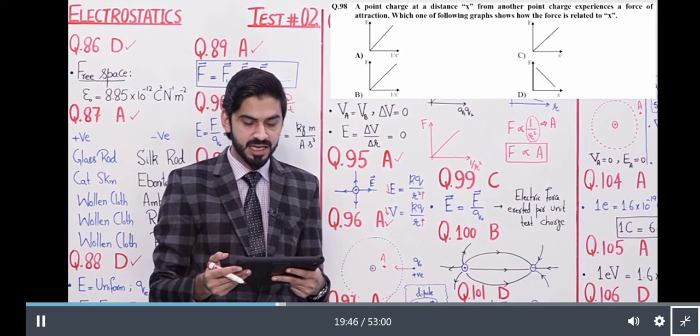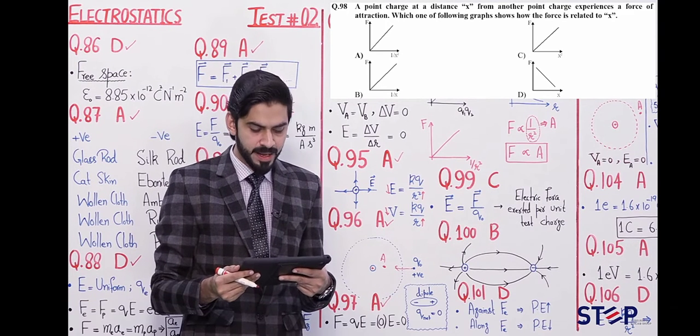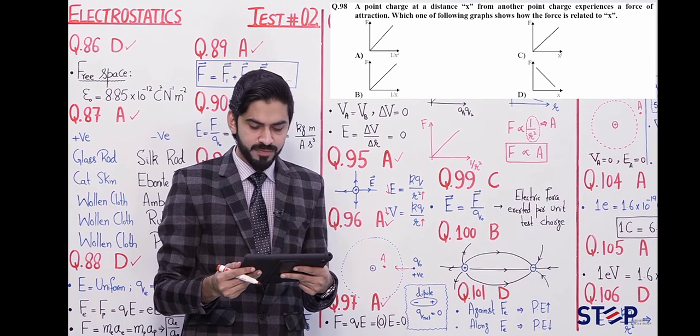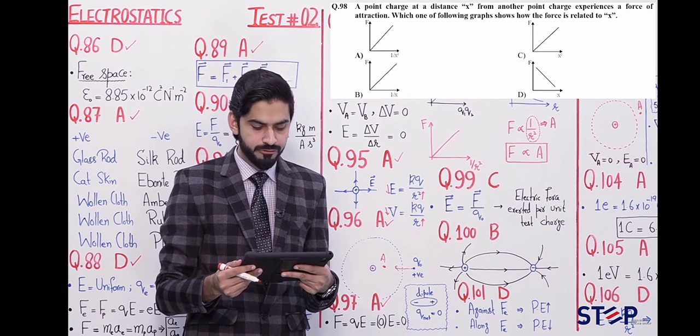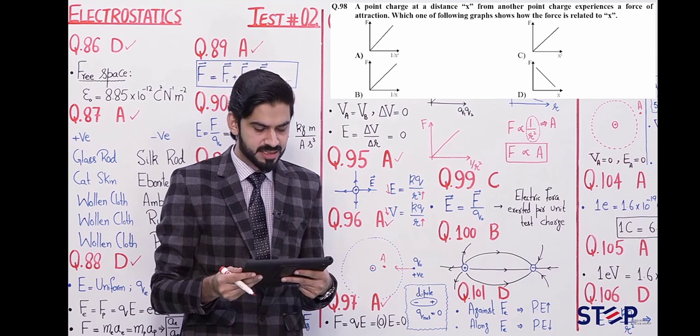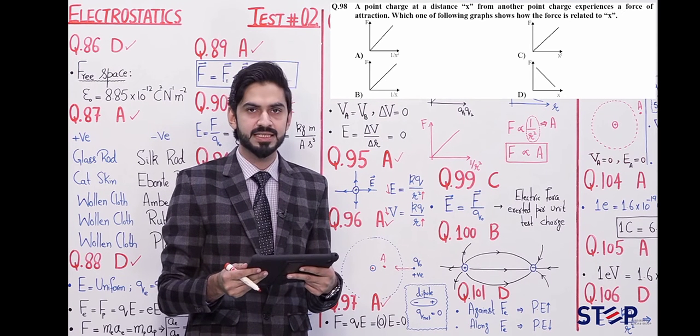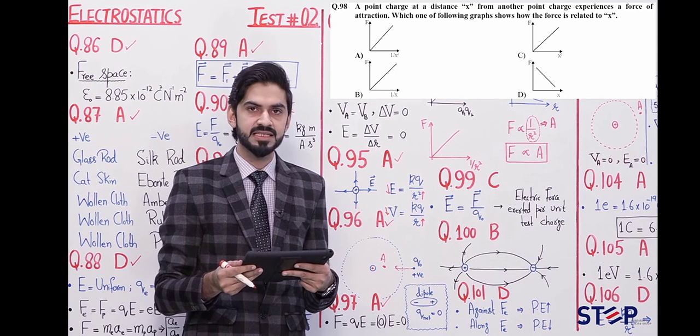This is an important question and all the possible graphs we discuss here. A point charge at a distance x from another point charge experiences a force of attraction. There are two charges, point charges, and the attraction exists. The following graph shows how the force is related to distance x.